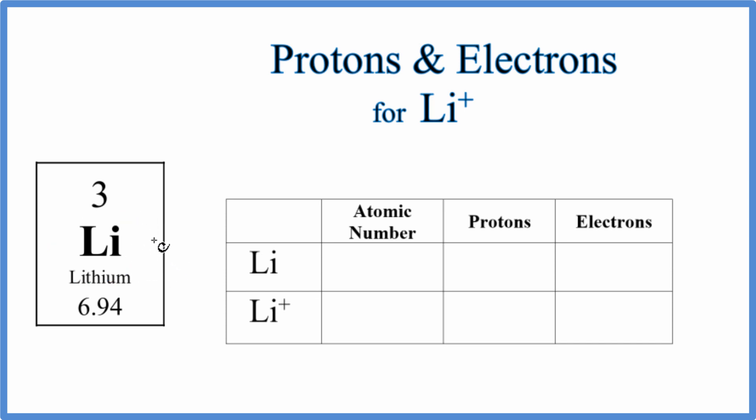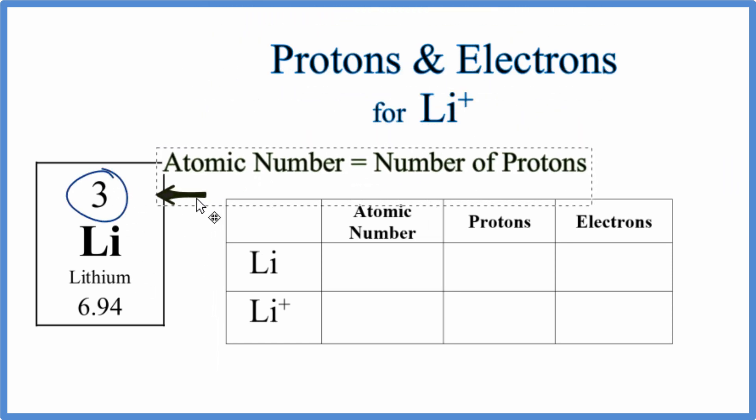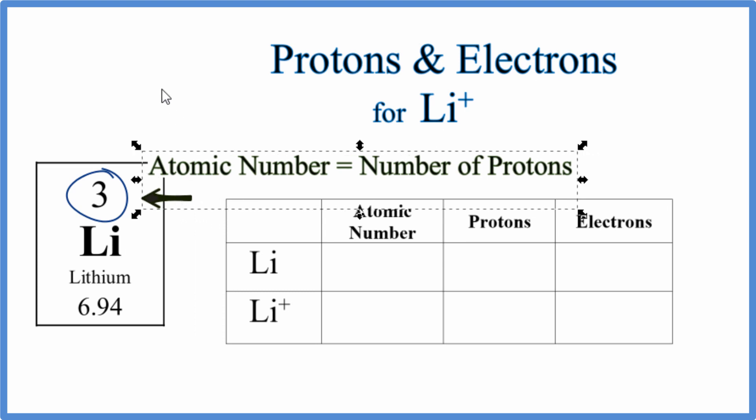For a neutral element on the periodic table, the atomic number, that's the number right here, equals the number of protons. So we have three for our atomic number for just Li, and the number of protons is three as well.